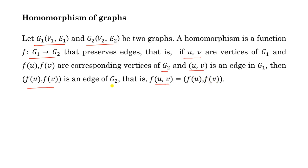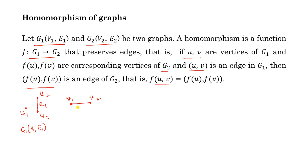Let us see one example. Suppose we have three vertices u1, u2, and u3, with one edge in graph g1 = (v1, e1). This edge is e1. Now consider another graph g2 with vertices v1 and v2, and edge e1 dash.